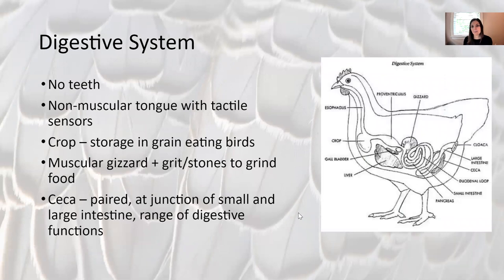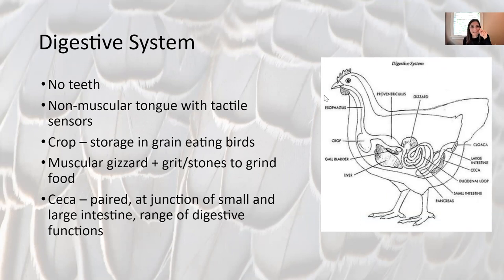The digestive system in birds: no teeth — teeth are heavy and you don't want to fly with teeth. Instead, birds swallow rocks into the gizzard, which grinds up food with the rocks, and they can regurgitate the rocks to fly again. Birds have a tongue but it's not muscular — it's kind of stiff, but it has tactile sensors. Different birds have different kinds of tongues; a woodpecker has a long probing tongue to find insects, but it's not muscular like in a mammal.